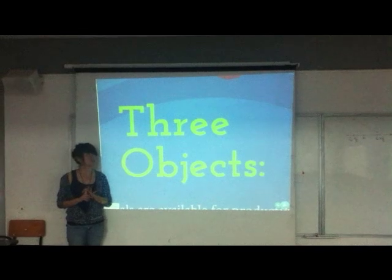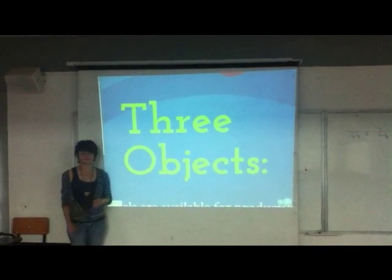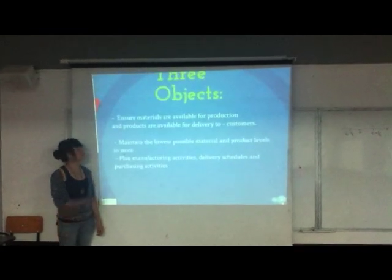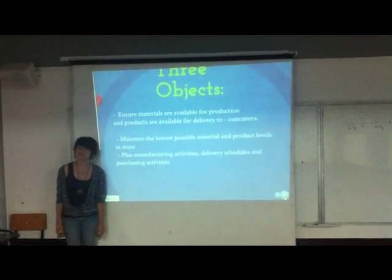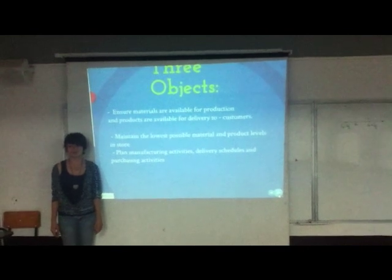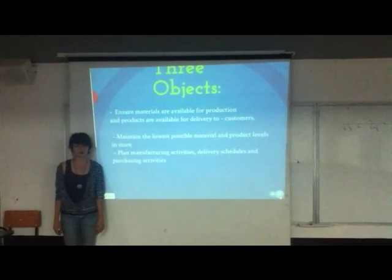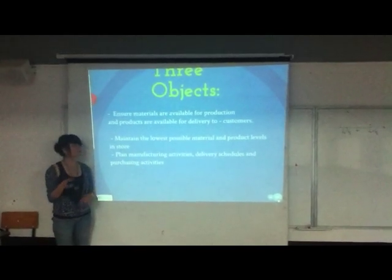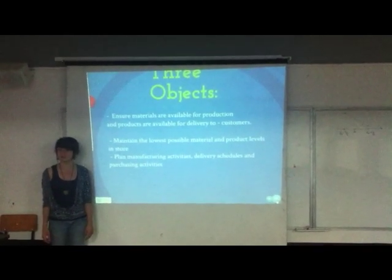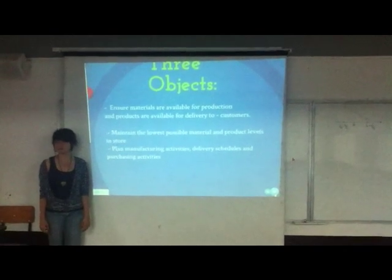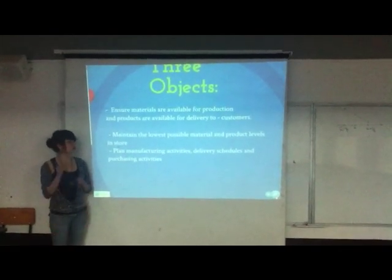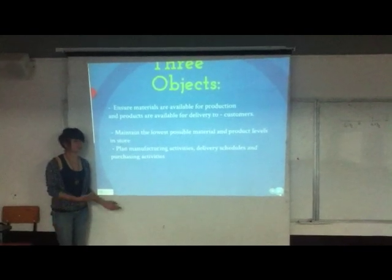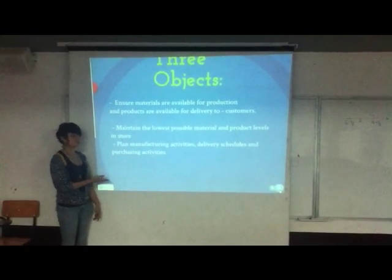In MRP1, we take into account three objectives. The first one is to ensure materials are available for production and products are available for delivery to customers. The second is maintaining the lowest possible material and product levels in store. The third one is to plan manufacturing activities, delivery schedules, and purchasing activities.